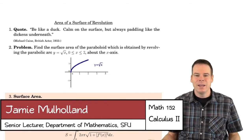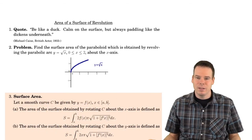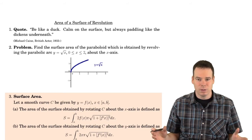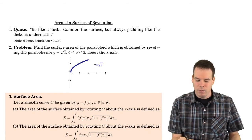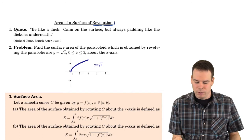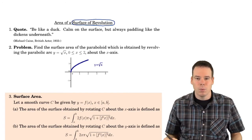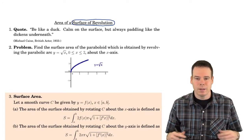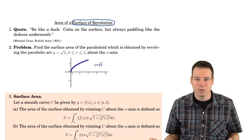Hi everyone, welcome back. In this lecture we're going to look at methods for computing the area of a surface, in particular surfaces that come about from revolving a region about an axis, so surfaces of revolution. How can we compute their surface area?